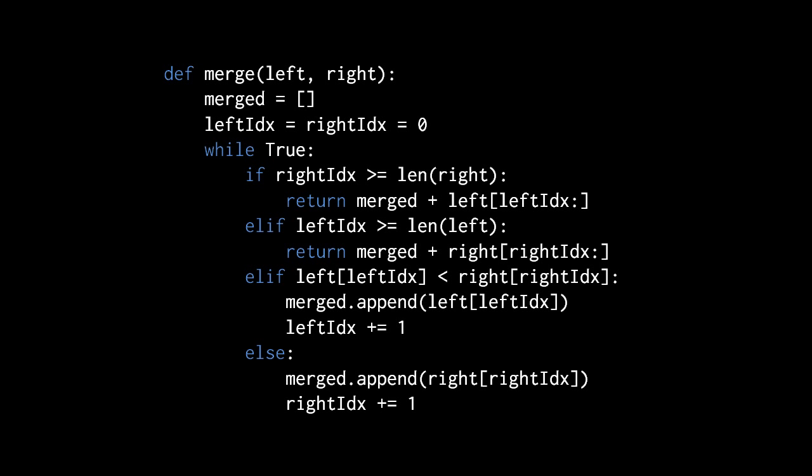The actual work is done in a loop with four mutually exclusive cases. There's the case where the right list has been exhausted, in which case right index will be greater than or equal to the length of the right list. There's the case where the left list has been exhausted, in which case left index will be greater than or equal to the length of the left list. Then there's the case where neither has been exhausted and the value in the left list is smaller than the right list. And finally, the value at right index in the right list is smaller than the value at left index in the left list.